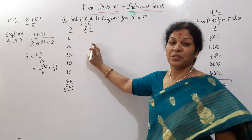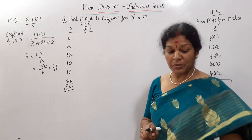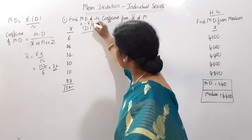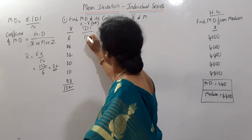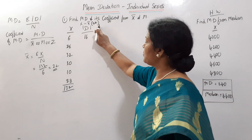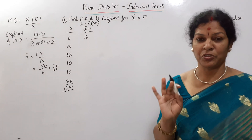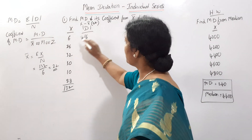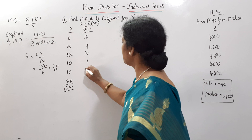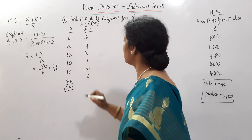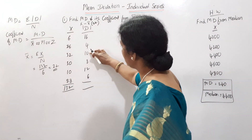Now we are taking deviations from X̄, so that is X minus X̄ = X minus 22. Each number: 6 minus 22 = 16 (we take mod, so positive 16). 26 minus 22 = 4. 32 minus 22 = 10. 30 minus 22 = 8. 10 minus 22 = 12. 28 minus 22 = 6. We total these up: 16 + 4 + 10 + 8 + 12 + 6 = 56. So σ|D| = 56.